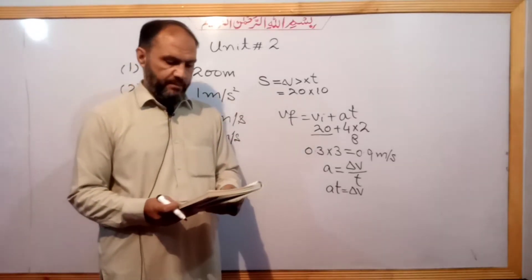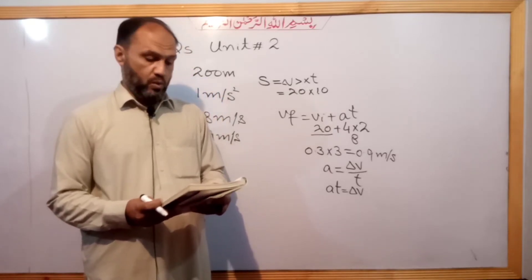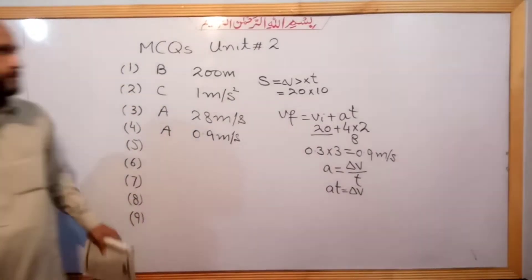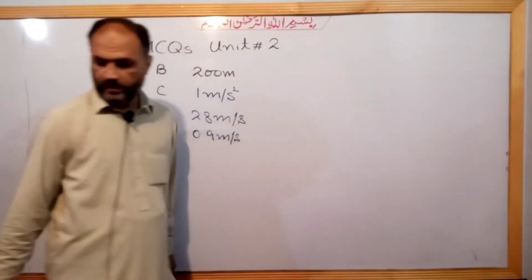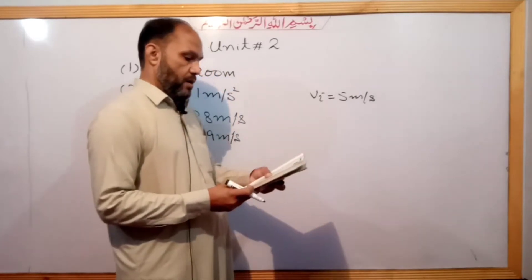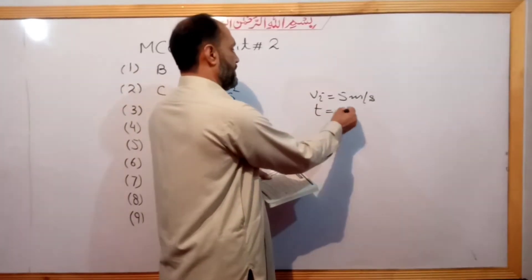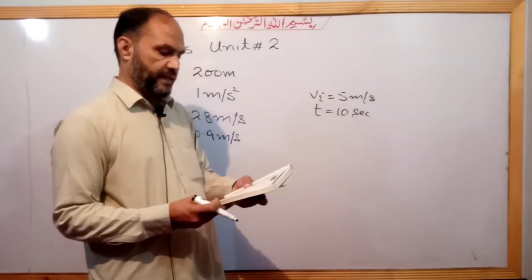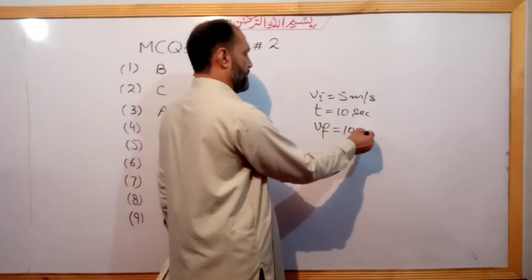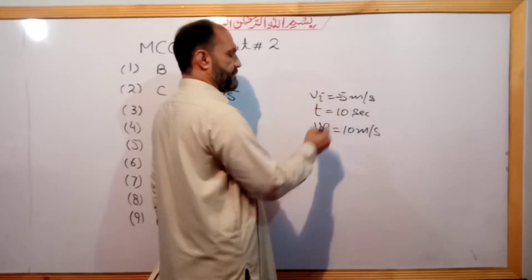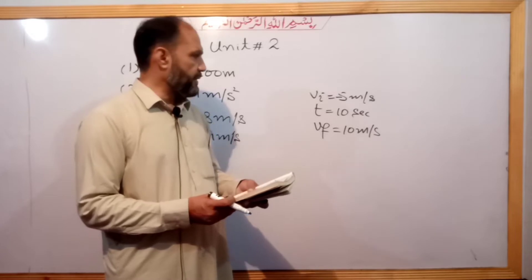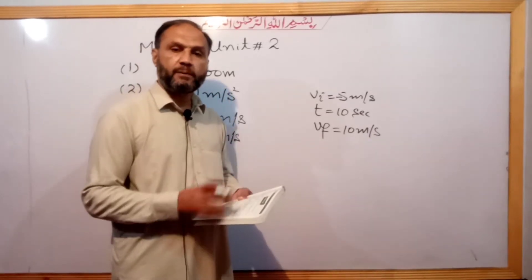Question number 5. A car is going backward at 5 meter per second, so the initial velocity is 5 meter per second. After 10 seconds of uniform acceleration, the car is going forward at 10 meter per second. Since the car is going backward initially, the initial velocity is minus 5 meter per second, and the final velocity is positive 10 meter per second.